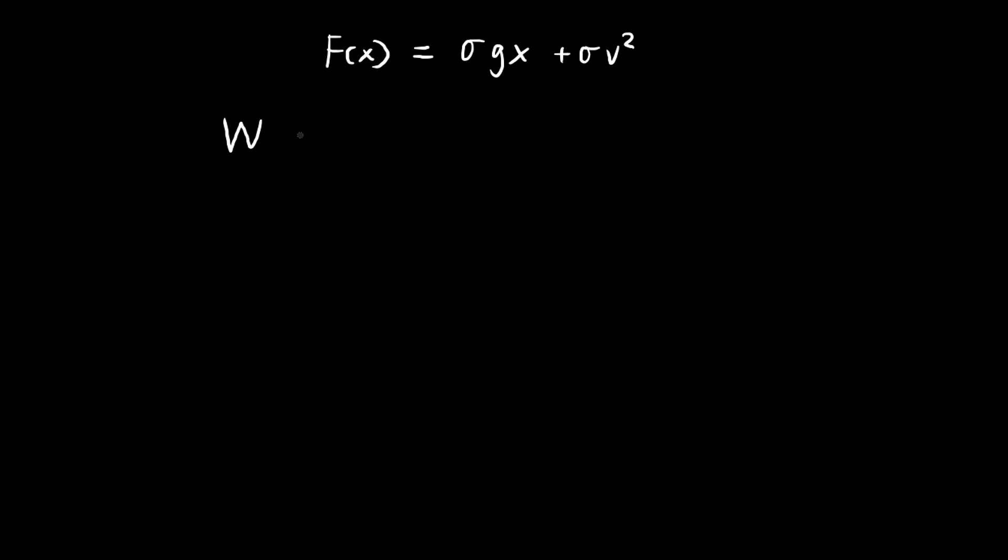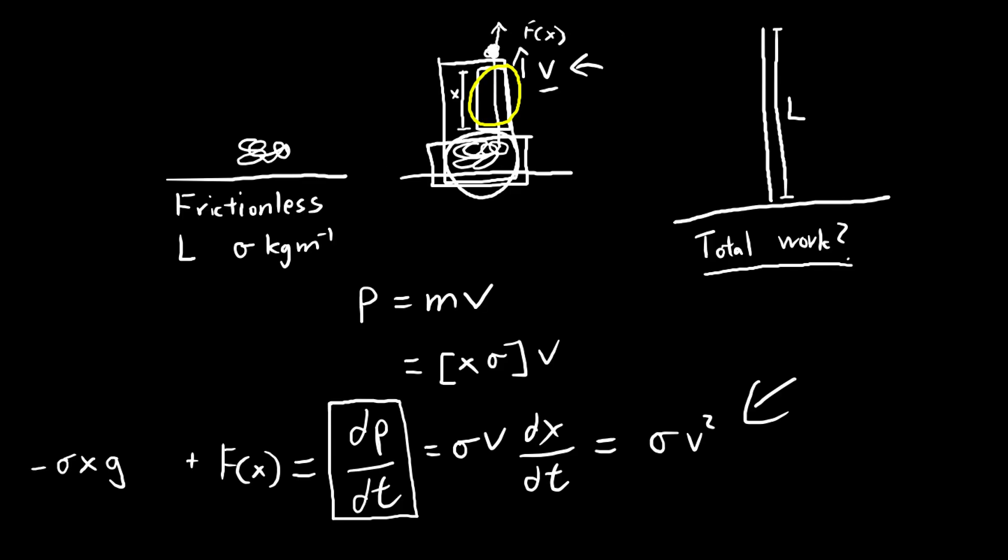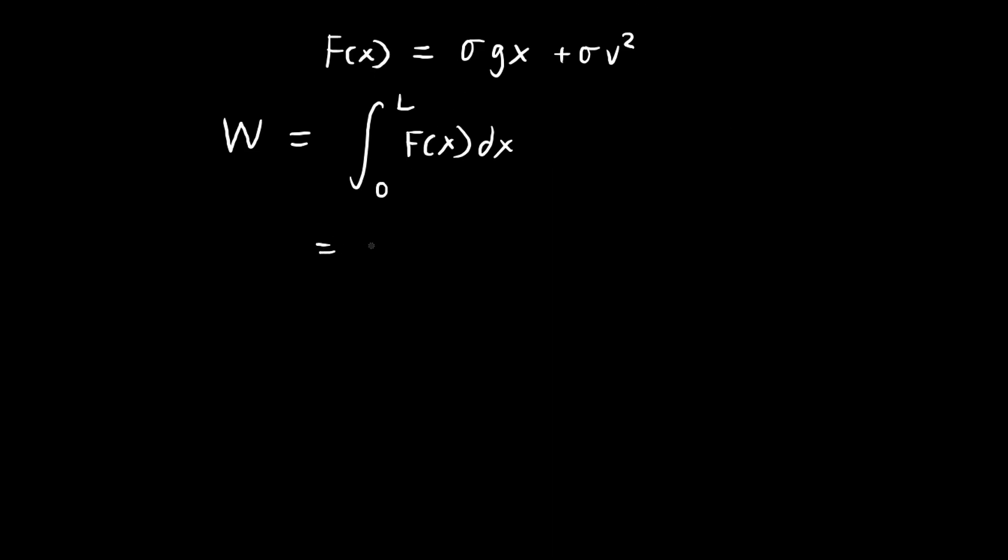Going back to our problem, we want to find the work done. Well work done is equal to force times distance. And the distance goes all the way from zero to L because L is the total length of the chain. So x needs to go from zero to L. So this is a relatively simple integral. It's an integral in terms of x. So now we substitute L in and then we get this.